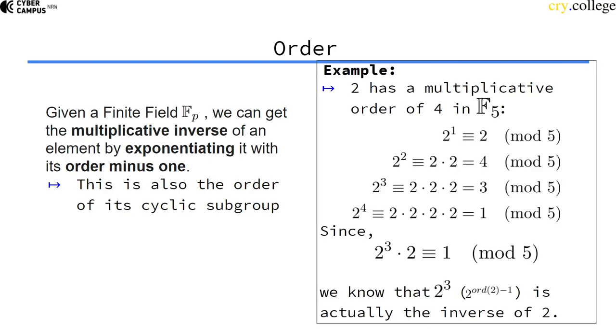So what does that mean? We saw earlier that 2 has an order of 4 in the multiplicative group within F5. So if I calculate 2 to the power of 4, or in other words, I apply the group operation (multiplication) four times, then I get 1, which is the neutral element, and we want the inverse of 2.